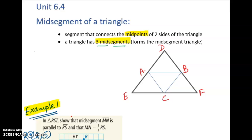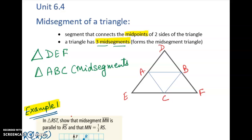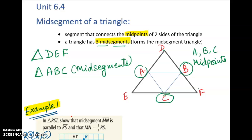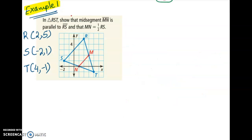What is the mid-segment triangle? As you can see in this diagram, the bigger triangle is DEF, and there is a smaller triangle ABC inside it. Triangle ABC is made up of the mid-segments, because points A, B, and C are midpoints. A is the midpoint of segment DE, B is the midpoint of segment DF, and C is the midpoint of segment EF.